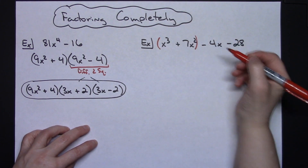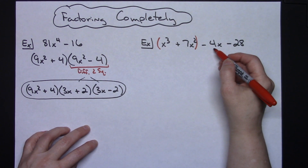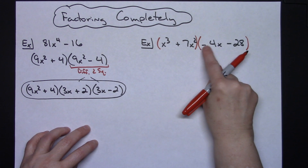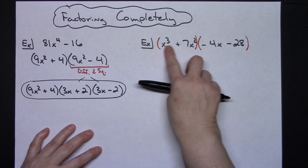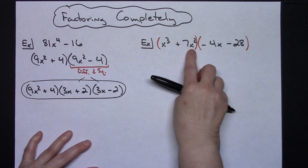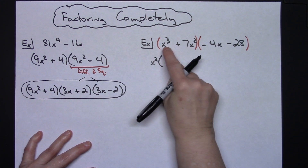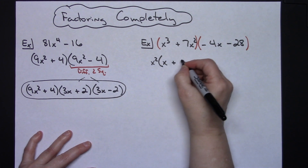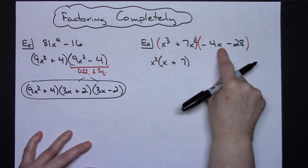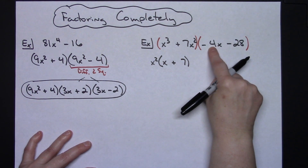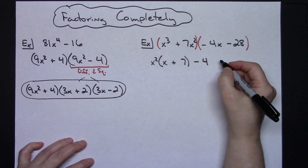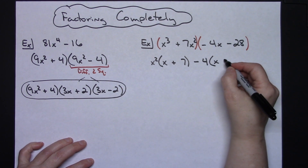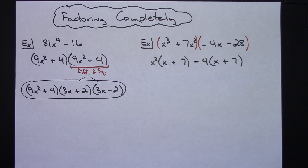I'm going to group the first two terms together and the second two terms together, making sure to include that minus sign so I can see that it's a negative 4. For factor by grouping, I take the greatest common factor out of the first group — that's x², leaving (x + 7). From the second group I take out a negative 4, because when the leading term is negative you want to take out that negative, leaving (x + 7).